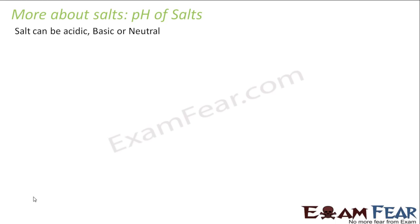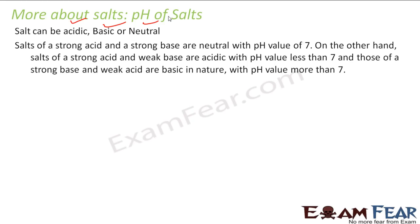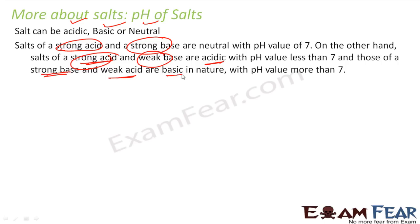Salt can be acidic, basic, or neutral. Salt of a strong acid and strong base is neutral. If you have a strong acid but a weak base, you get an acidic salt — because the acid was strong. A strong base with a weak acid gives you a basic salt. So if both are equally strong — strong acid and strong base — you get a neutral salt.